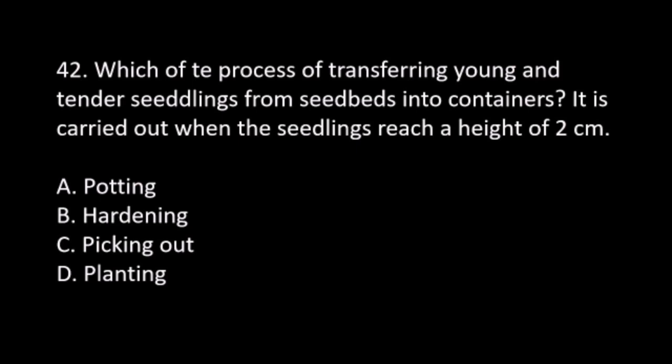Number 42. Which is the process of transferring young and tender seedlings from seedbeds into containers? It is carried out when seedlings reach a height of 2 cm. A. Potting. B. Hardening. C. Picking out. D. Planting. The answer is C. Picking out.